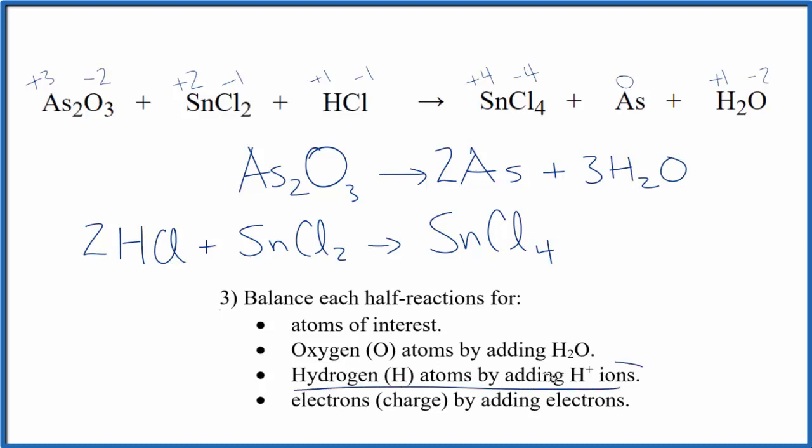For hydrogen, we add H⁺ ions, the hydrogen ion. This is taking place in an acidic medium, so we have hydrogen ions available. That's because of the hydrochloric acid up here. Three times two is six, so we could put six hydrogen ions here. That would balance the hydrogens.